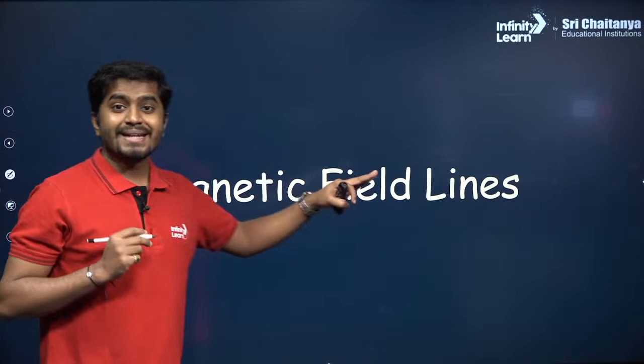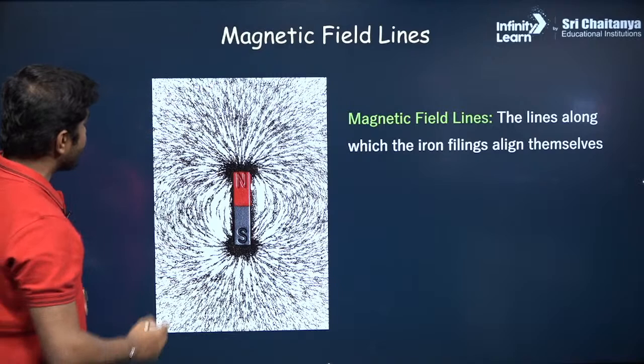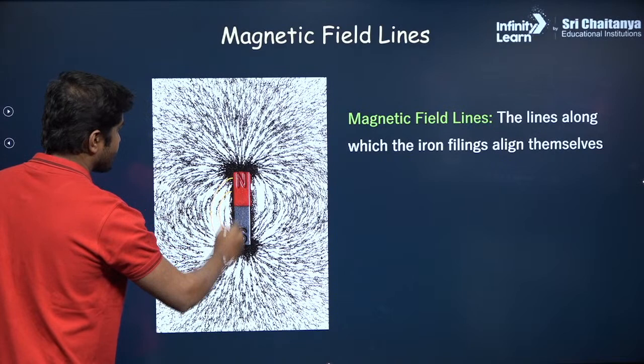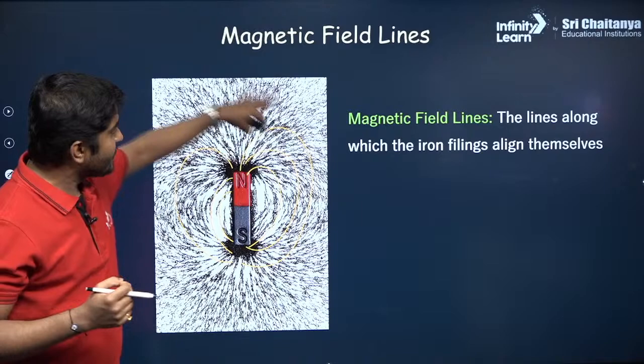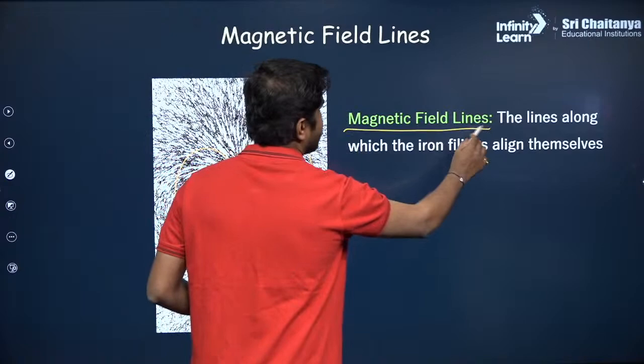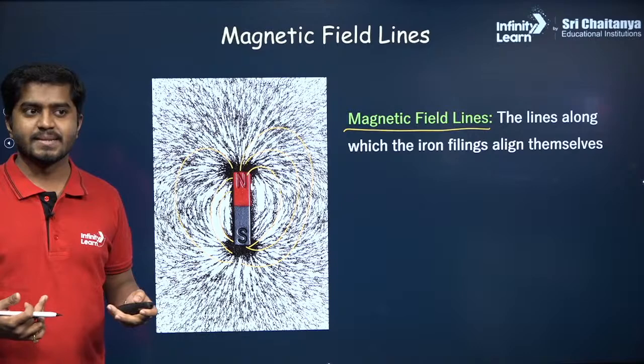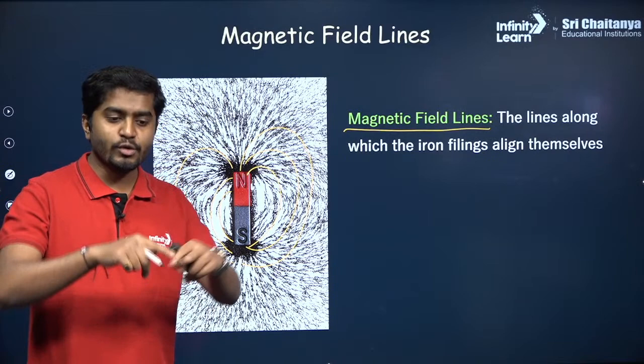Let's do the iron filing experiment. Iron filings are the powder or dust of iron. If you sprinkle iron filings around a bar magnet, the region where most iron filings are attracted is near the poles — at the edges. Not many iron filings are attracted at the center. The regions where most iron filings are attracted are called the poles of a magnet, and every bar magnet always has two poles — that is why it is called a magnetic dipole. The pattern along which the iron filings align is called magnetic field lines.